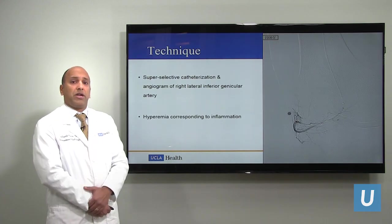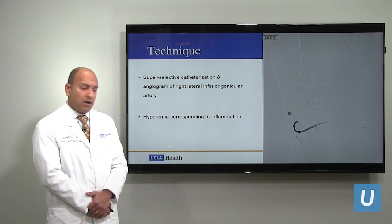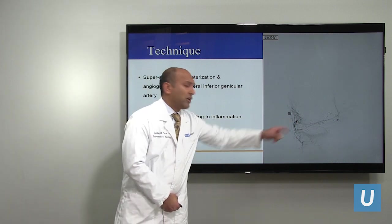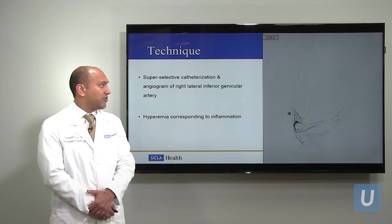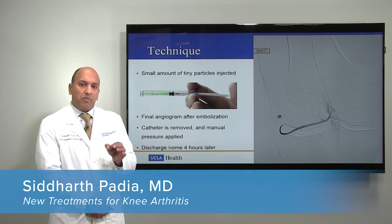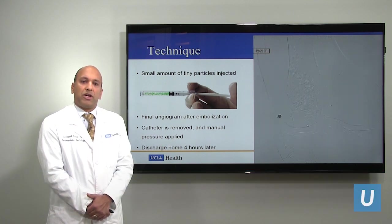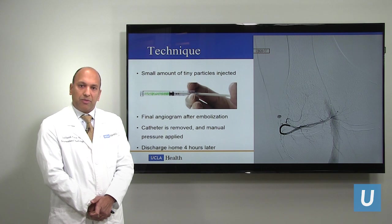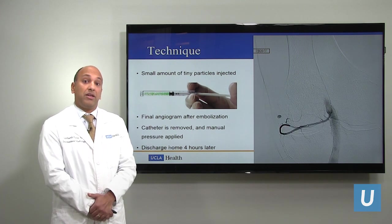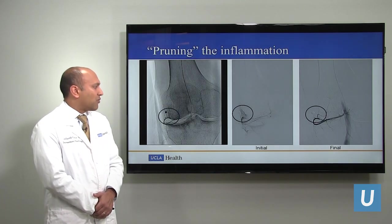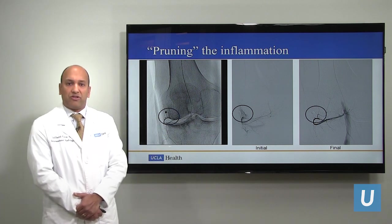From here, we actually go into the artery in the area where the person has pain. You can see a small triangular-shaped area of inflammation right here next to the BB marker, which corresponds to the inflammatory process causing the arthritis. Through that small catheter, we inject very tiny particles — 100 microns in diameter, like small grains of sand. We inject a very small aliquot of these particles to decrease or get rid of the inflammation in that artery. The final result is that the artery is maintained, but this triangular hyperemia, or inflammation, has disappeared.